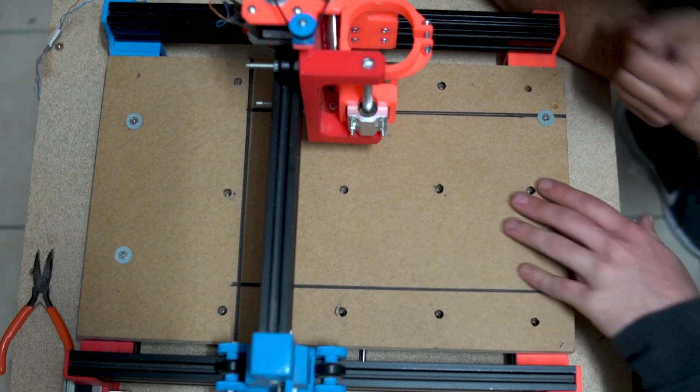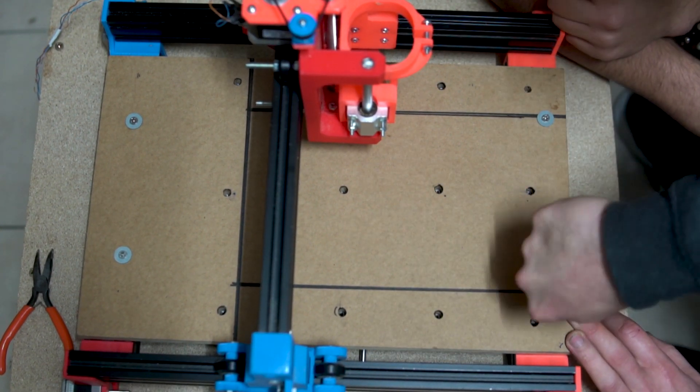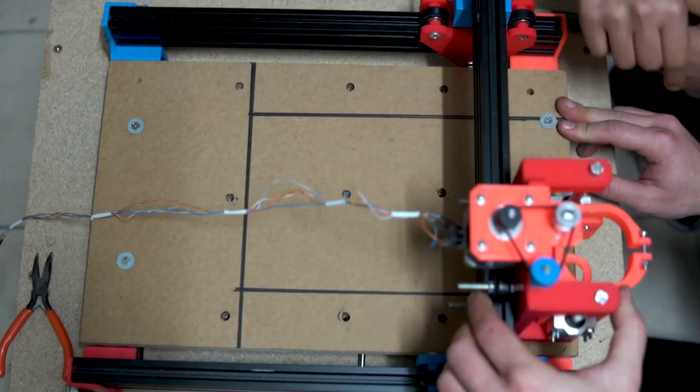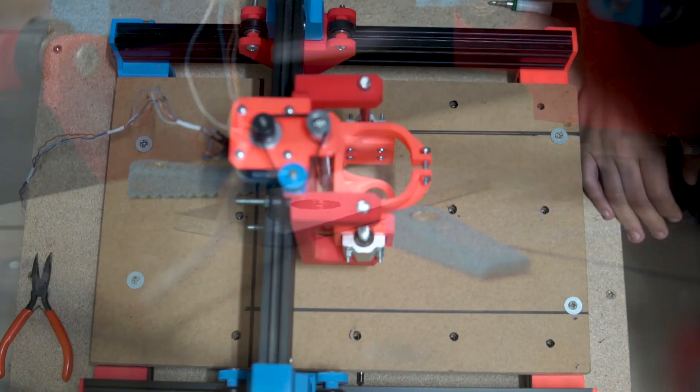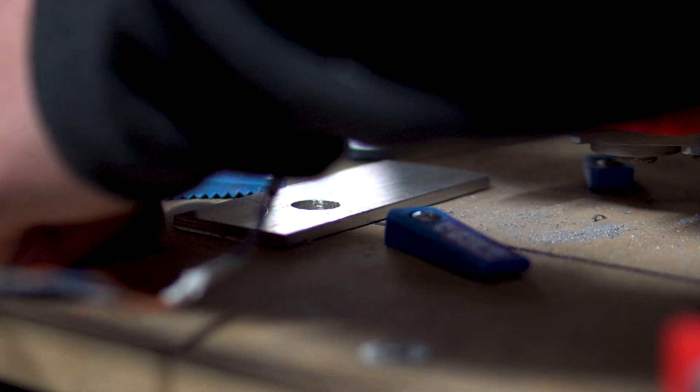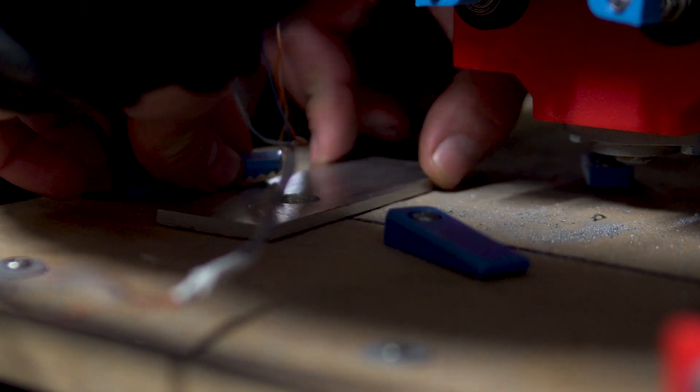All the axes work freely and we are ready to test out our machine's capability. The 3D printed clamps are in place and the cutting begins.